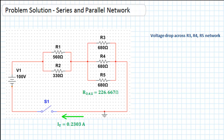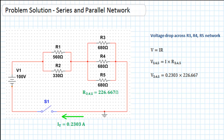Similarly, for the voltage drop across the R3/R4/R5 network we use Ohm's law and substitute in the effective resistance: IT = 0.2303 and R345 = 226.667 ohms. Multiplying those gives the voltage drop across the R3/R4/R5 network as 52.201 volts.